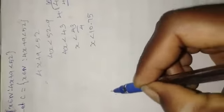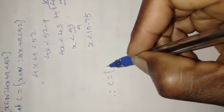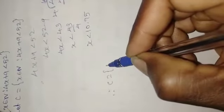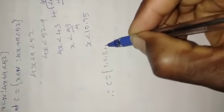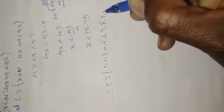So therefore, roster form is: X value, X less than 10.75 means 1, 2, 3, 4, 5, 6, 7, 8, 9, 10.